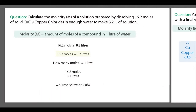Let's get started with this question: calculate the molarity (M) of a solution prepared by dissolving 16.2 moles of solid CuCl₂ — that's the chemical formula for copper chloride — in enough water to make 8.2 liters of solution. I'm going to break this question down and show you the important parts.